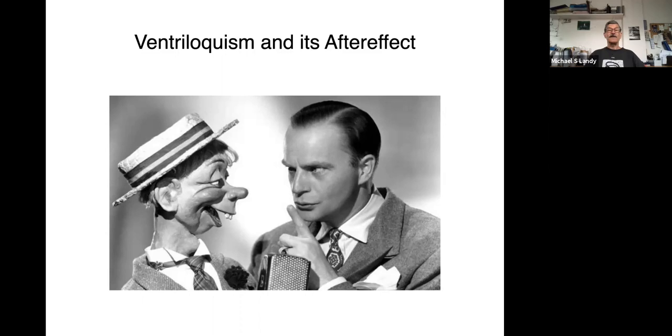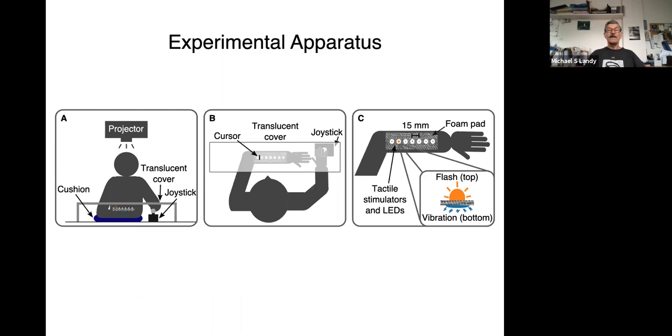Now, what's cool is that this not only works for vision and audition, it also works for vision and touch. And we study that with this fun apparatus that we have velcroed to your arm that has seven little buzzers like you have in your cell phone at different places along your forearm, and co-located seven different LEDs that can flash. So you can get buzzes on your skin, flashes both in the same location or different locations, and we can use that to study this effect.